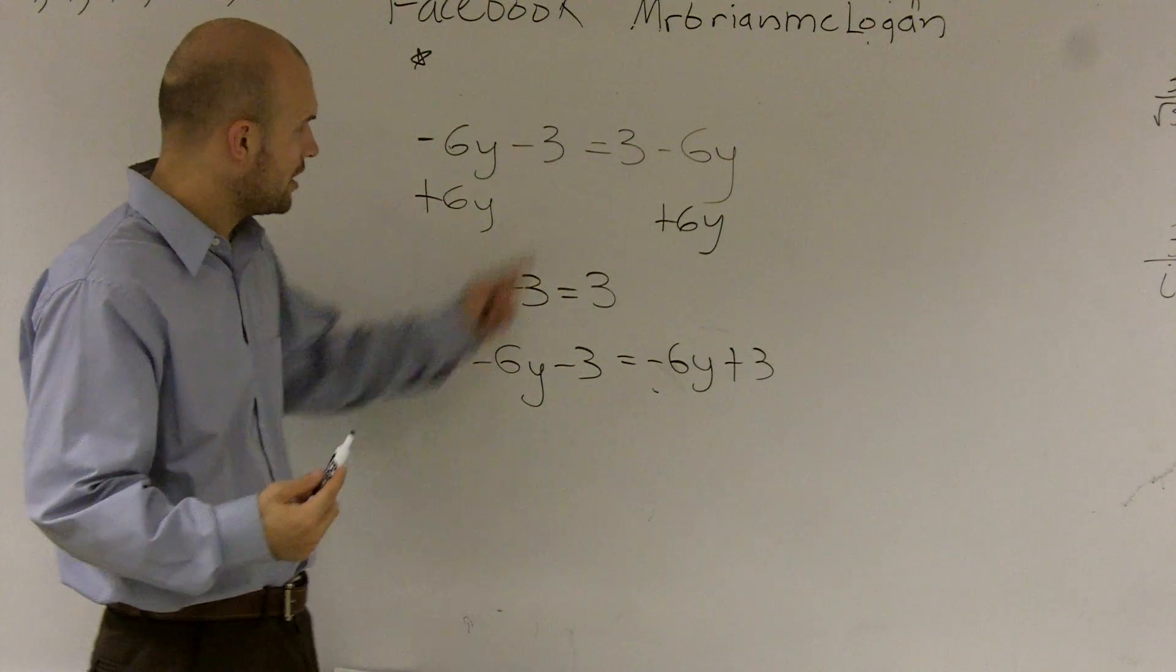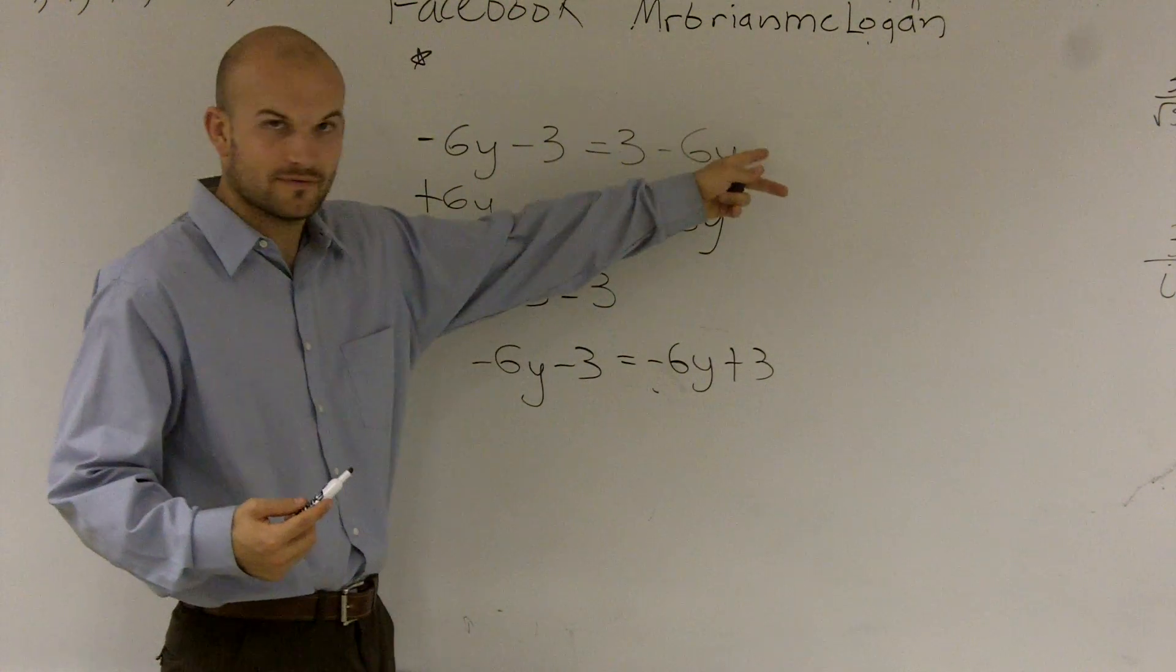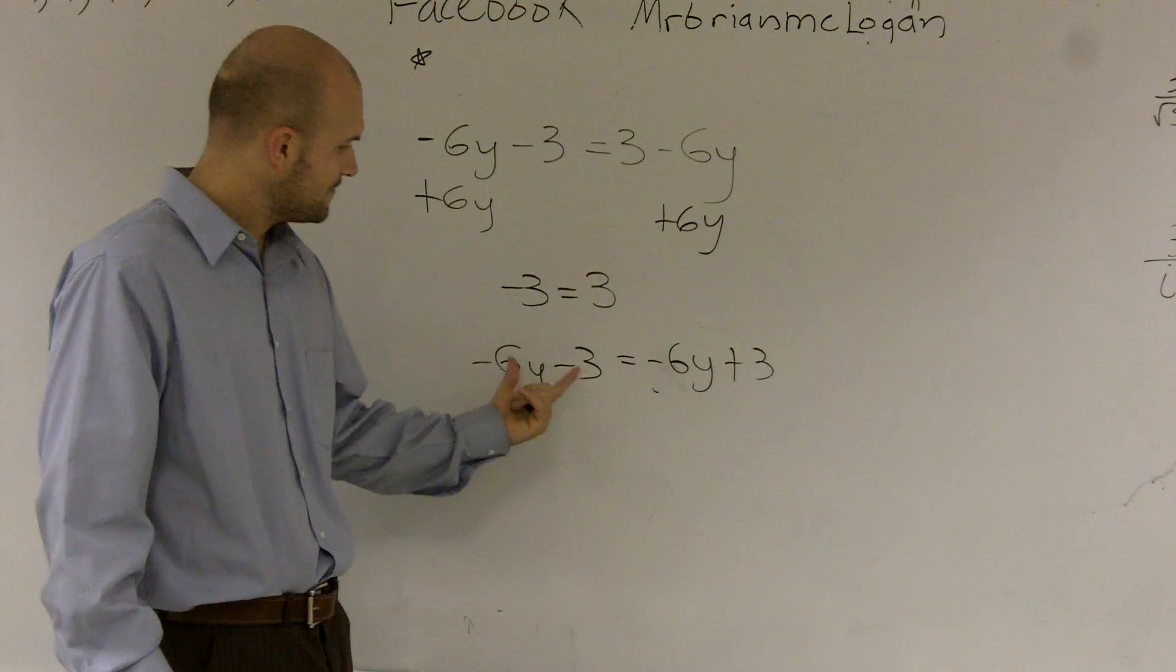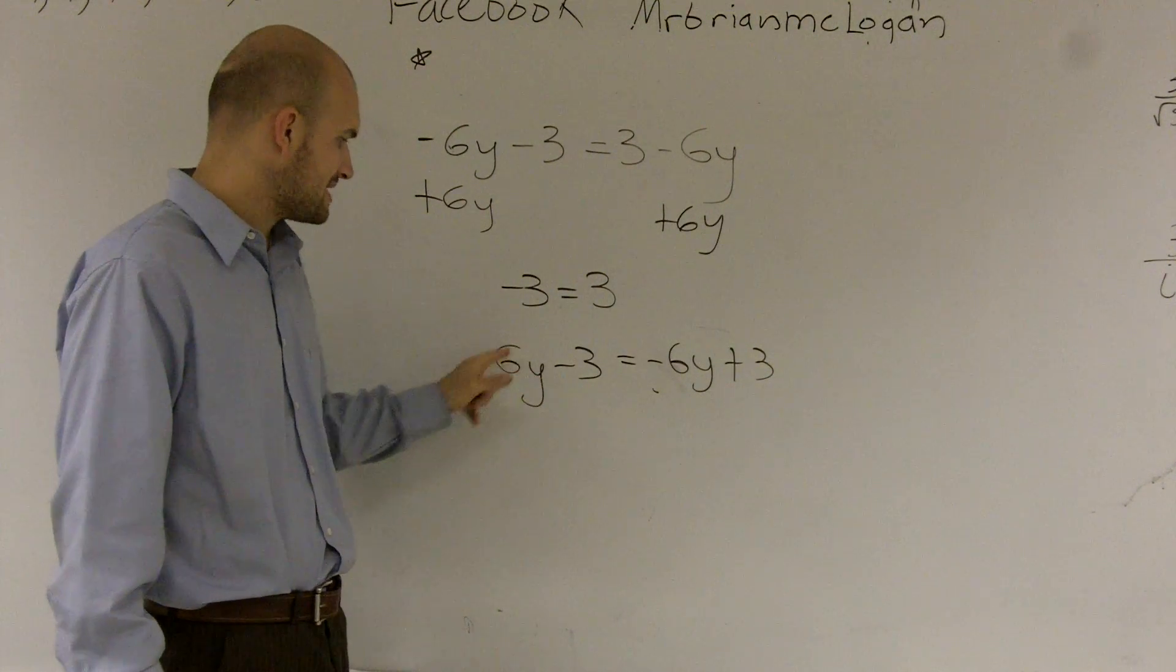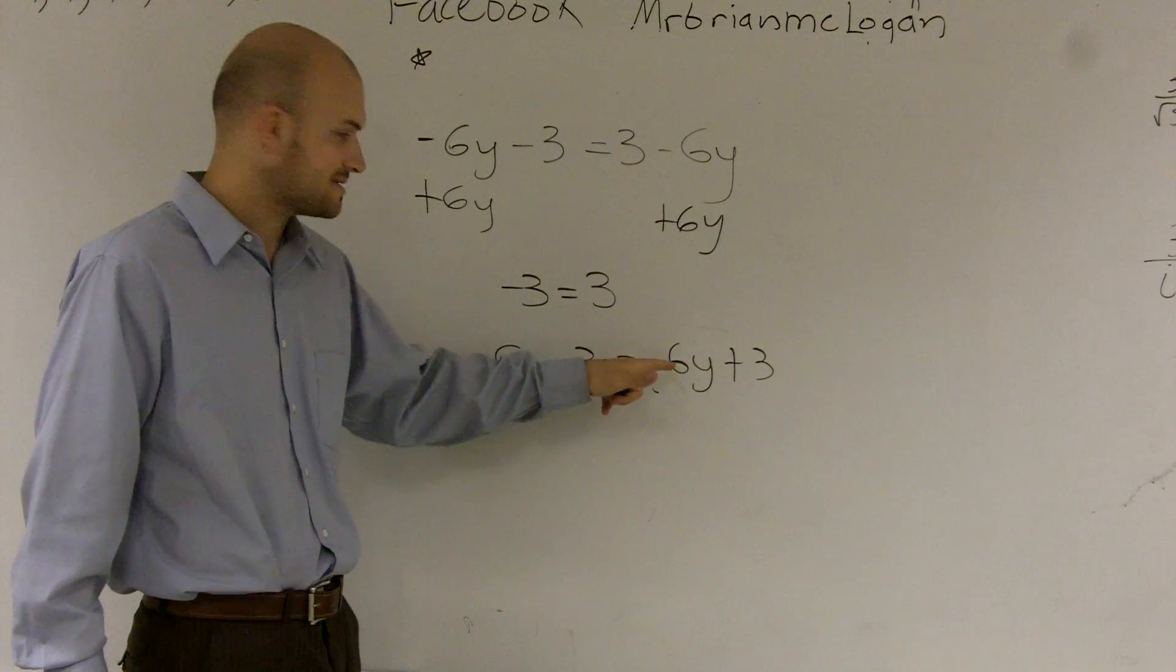So let's look at what's happening to our variable. All I did was I rewrote that as a positive over there, or as a plus adding. So I multiply my variable times negative 6. I do that on both sides.